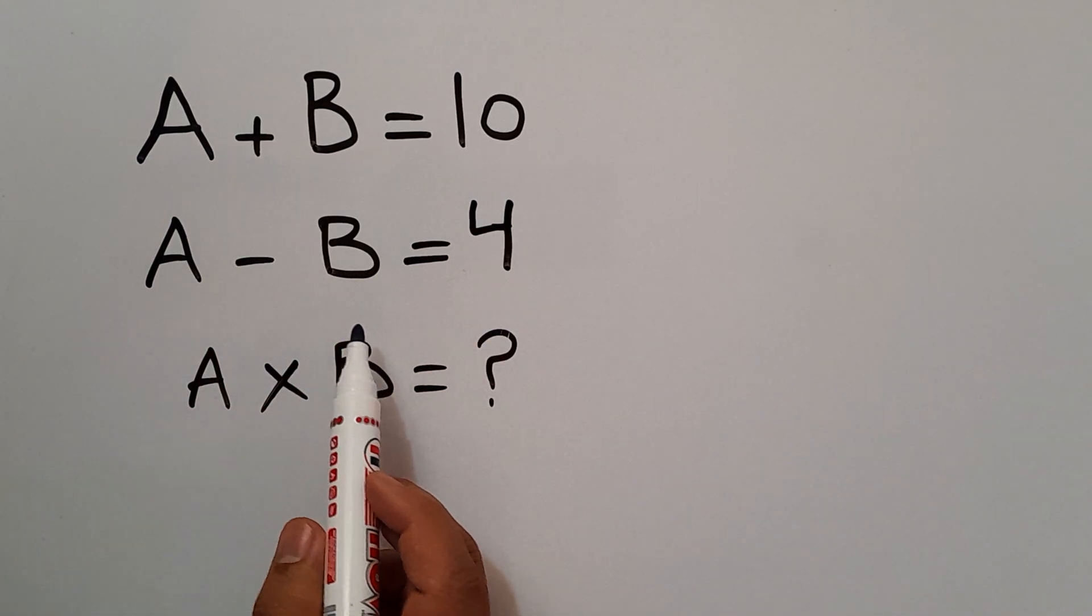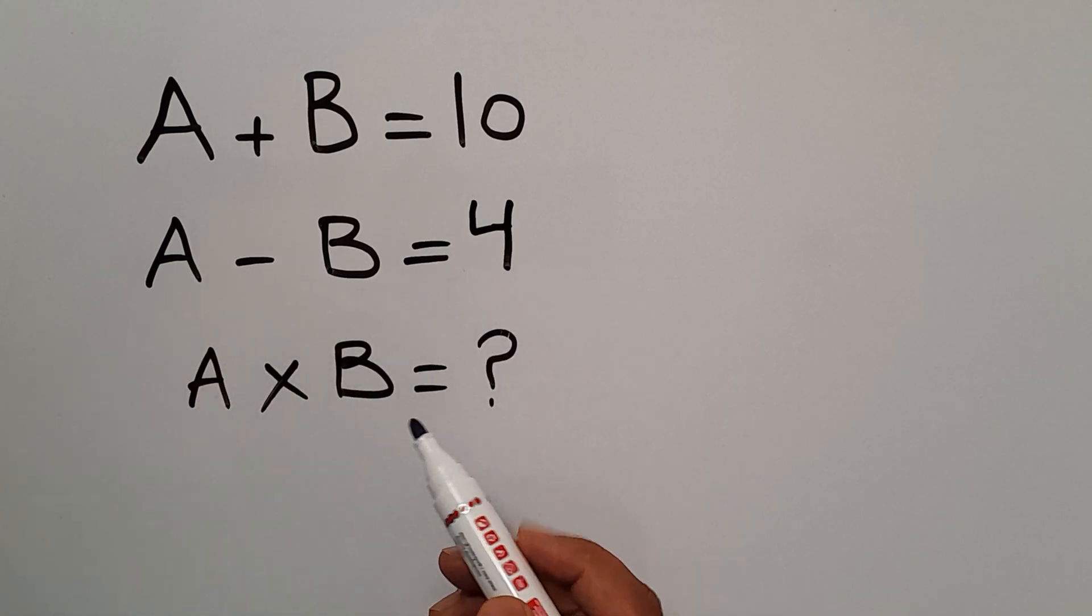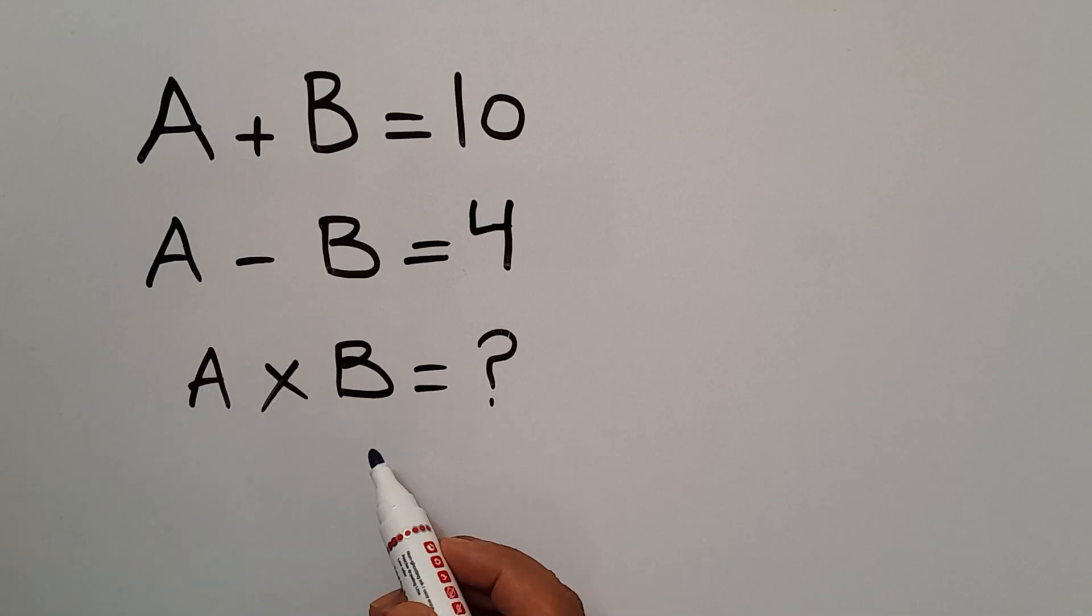A plus B equals 10. A minus B equals 4. Our goal is to find the value of A times B. Are you ready to solve? Let's go ahead and get started.